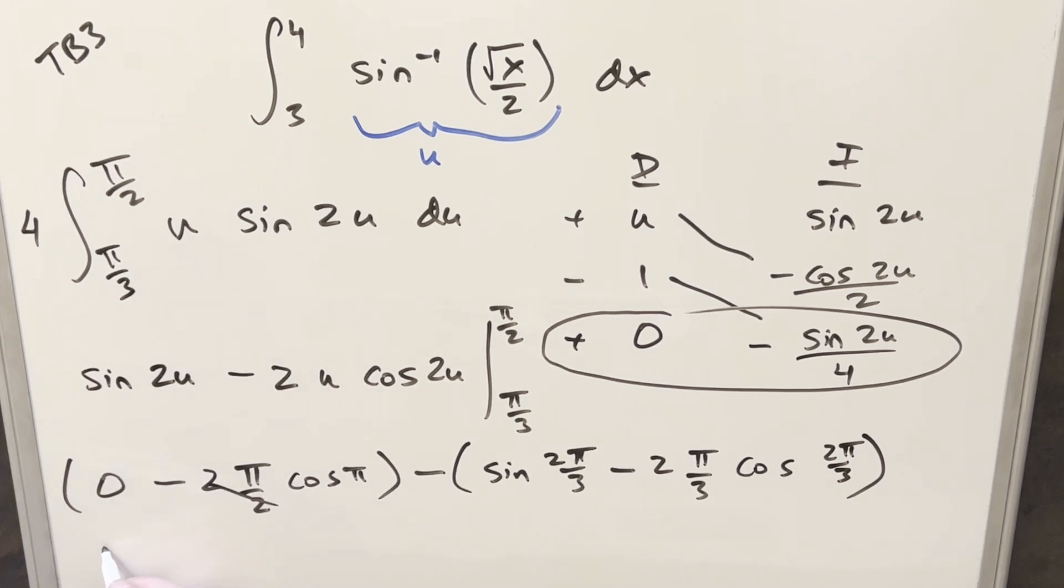Then just simplifying, like twos are going to cancel here. Minus pi. Cosine pi is minus one. So this is actually going to be a plus pi right here. Then minus all this stuff. Sine at two pi over three. That's going to be square root of three over two. Minus two pi over three. Cosine two pi over three. That's going to be minus one half. So write it out like this. Here, minus times minus is plus. Twos can cancel here. I'm going to distribute in the minus sign. Let's put it together.